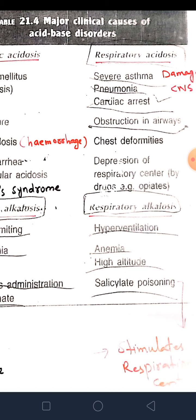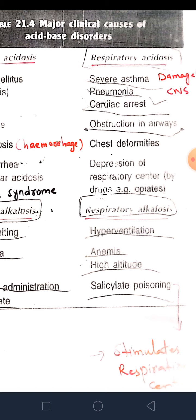Conditions leading to respiratory acidosis include severe asthma, pneumonia, cardiac arrest, and obstruction in airways. Similarly, depression of the respiratory center — the medulla — can be caused by certain drugs that depress the respiratory center, leading to hypoventilation, which causes carbon dioxide retention and more acid production. Drugs that stimulate the respiratory center lead to hyperventilation, causing removal of carbon dioxide and less acid production.